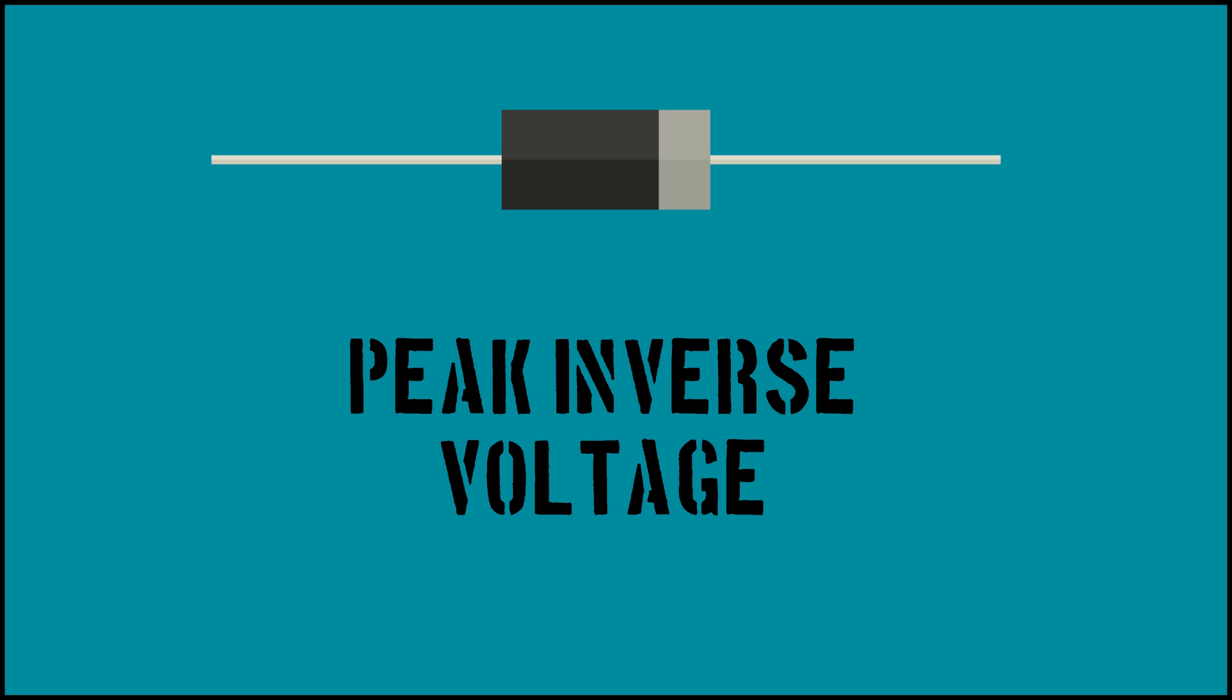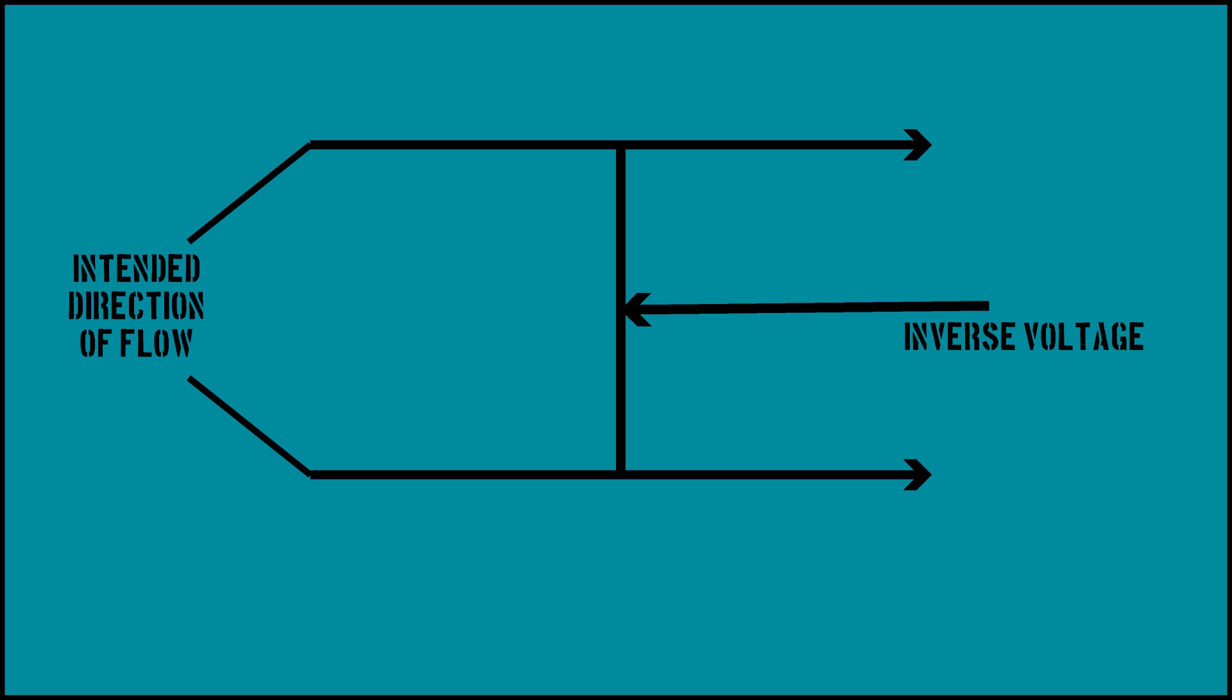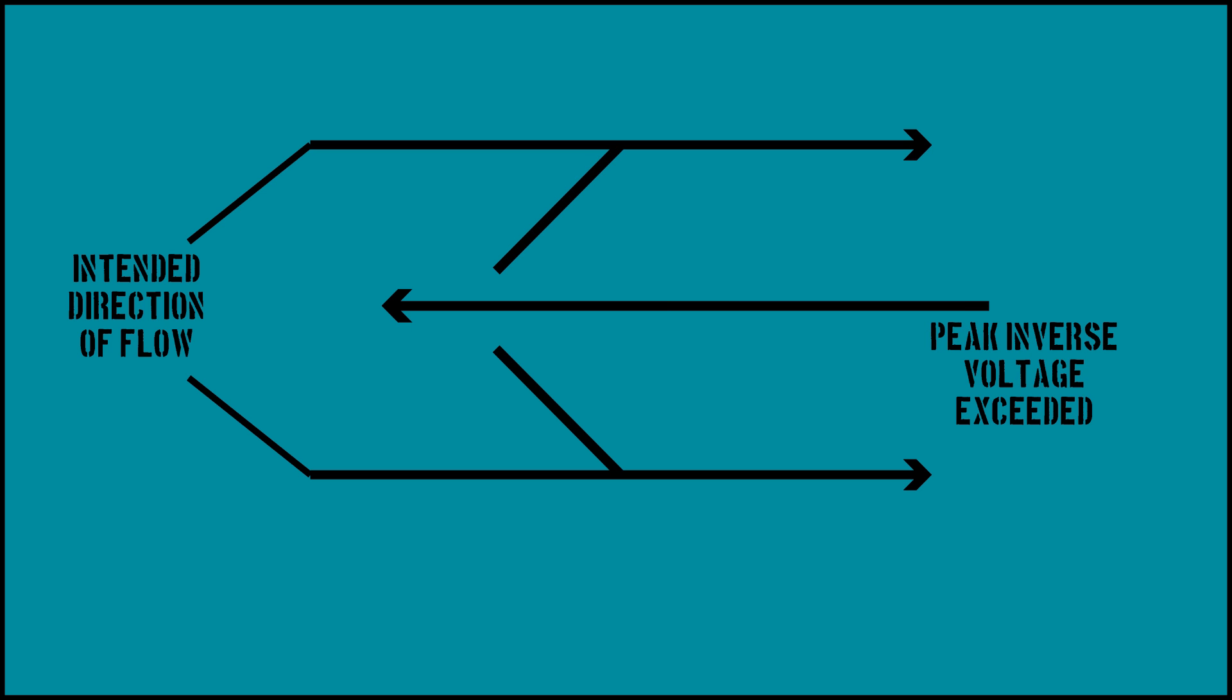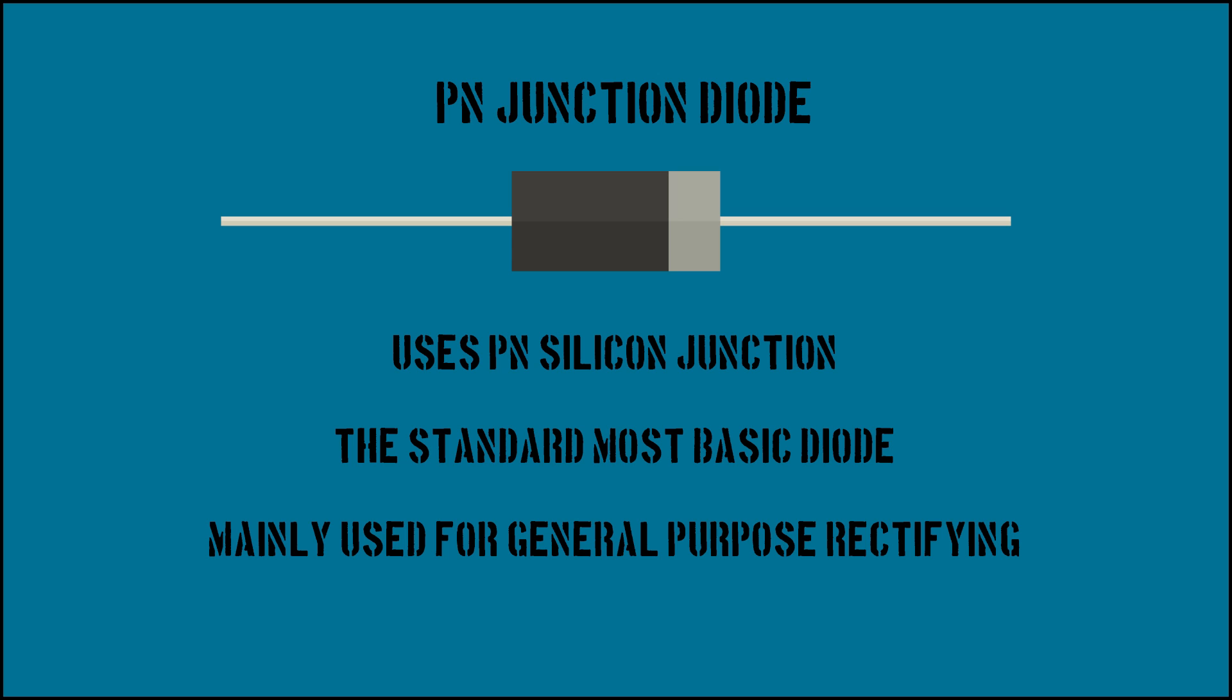The second factor is peak inverse voltage. This refers to the maximum voltage the diode will prevent from flowing in the wrong direction. If this voltage is exceeded, the diode will avalanche and allow current to flow in the incorrect direction. Some common types of diodes include the following.